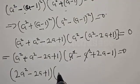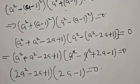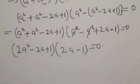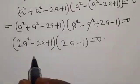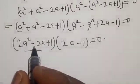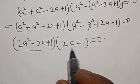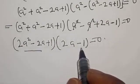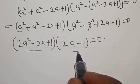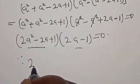After cancellation, we are left with 2A minus 1 equal to 0. There are two cases: 2A squared minus 2A plus 1 equal to 0, and 2A minus 1 equal to 0.